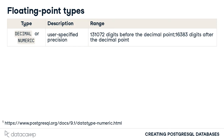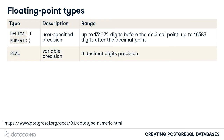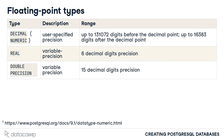The decimal and numeric types are interchangeable. These are types that allow for a wide range of floating point values to be stored in a table, as can be seen based on the range description. The real type guarantees 6 decimals of precision. The double precision type is similar but guarantees 15 digits of precision. Real and double precision are best suited for columns where it is desirable to reduce storage space and it is okay that the number inserted into the database is not exactly equal to the number returned by a query.